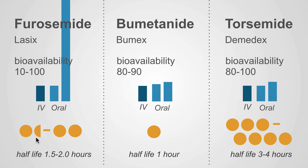The other big difference is half-life. The half-life of Lasix is one and a half to two hours, much shorter with bumetanide at one hour, and a longer half-life with torsemide at three to four hours.